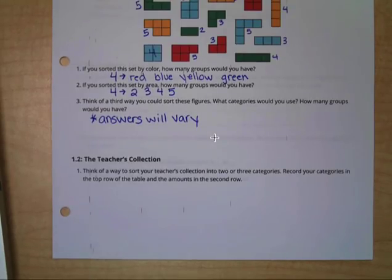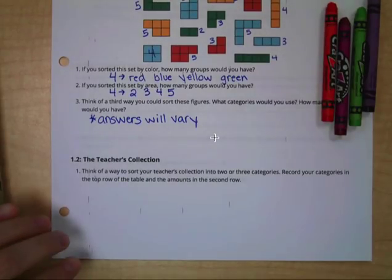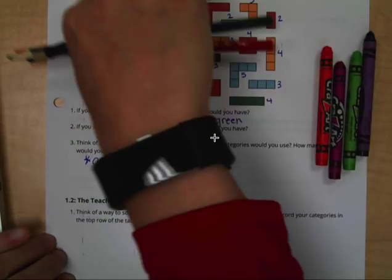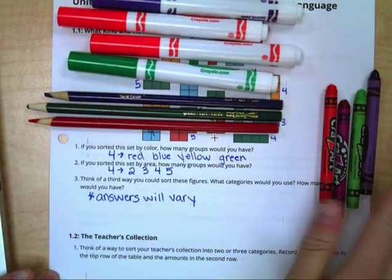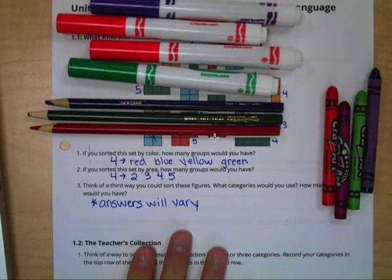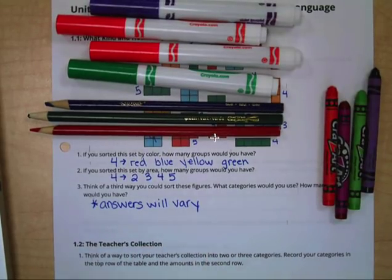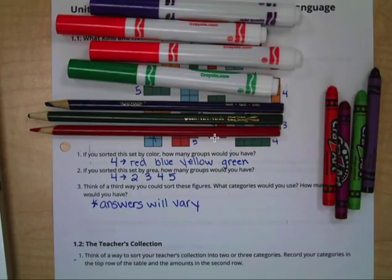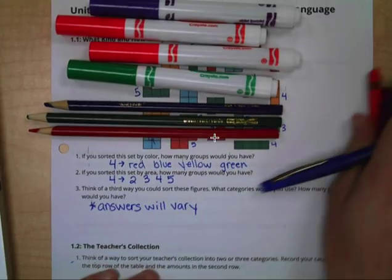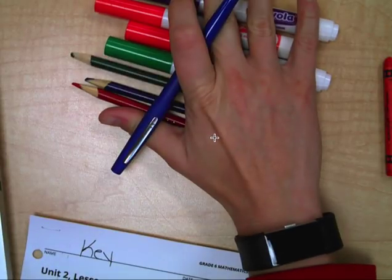When you're ready, we're going to move on to the next lesson. And what I have here are some different writing utensils. Slide this down so we can see them all. And at the bottom here, it says to think of a way that you could sort this collection into two or three categories. So by looking at my different objects here, think of a way that we could sort them into two or three categories. I'm going to flip my page. So when you're ready, you can flip your page as well.